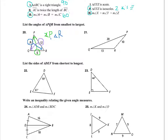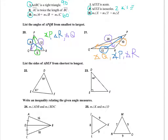For question 21, the same principle applies. The smallest side is 10, and the angle across from it is angle Q. The next smallest angle is angle P, and the largest side corresponds to the largest angle, which is angle R. So the order from smallest to largest is: angle Q, then angle P, then angle R.